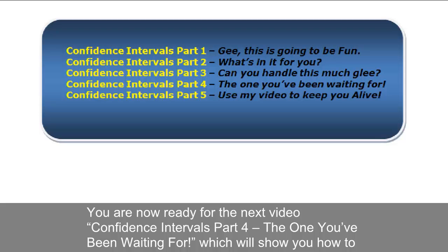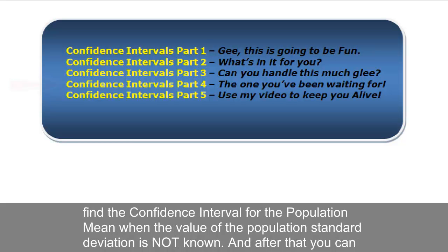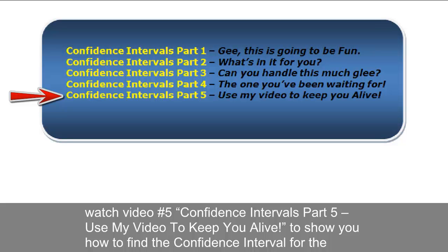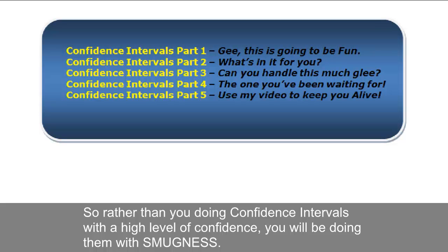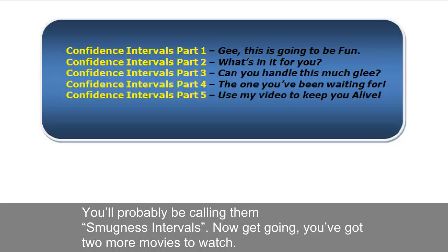You are now ready for the next video, confidence intervals part 4, the one you've been waiting for, which will show you how to find the confidence interval for the population mean when the value of the population standard deviation is not known. And after that, you can watch video number 5, confidence intervals part 5. Use my video to keep you alive, to show you how to find the confidence interval for the population proportion, instead of the mean. After that, you will be the master of confidence intervals. So rather than you doing confidence intervals with a high level of confidence, you will be doing them with smugness. You'll probably be calling them smugness intervals. Now get going! You got two more movies to watch!